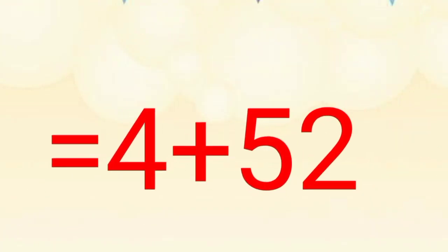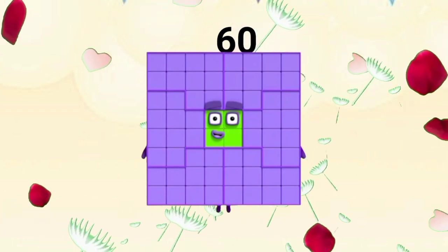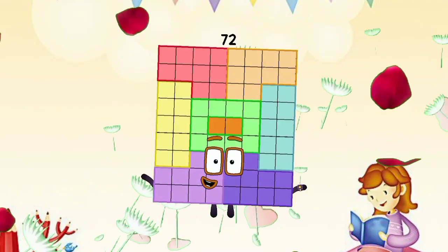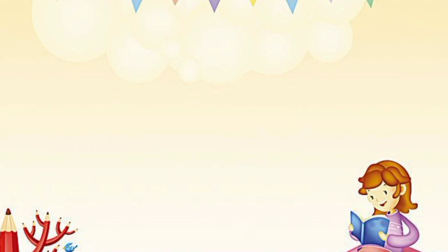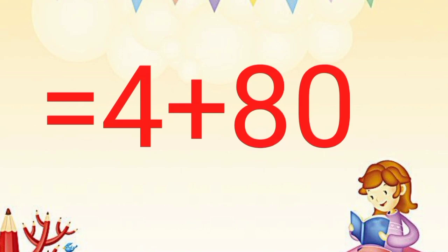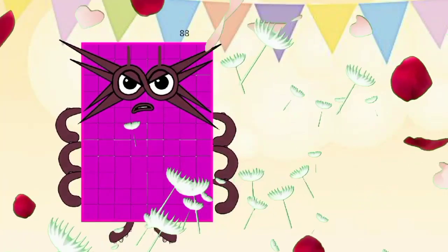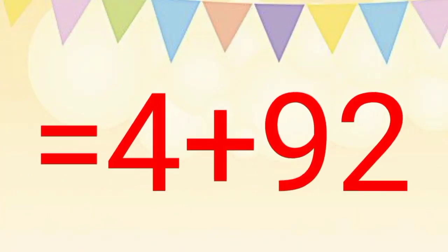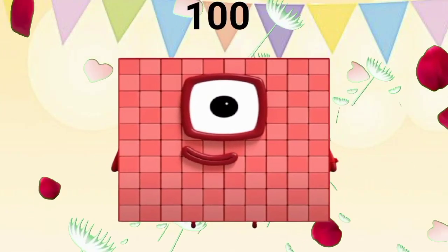Fifty-two plus four equal to fifty-six. Fifty-six plus four equal to sixty. Sixty plus four equal to sixty-four. Sixty-four plus four equal to sixty-eight. Sixty-eight plus four equal to seventy-two. Seventy-two plus four equal to seventy-six. Seventy-six plus four equal to eighty. Eighty plus four equal to eighty-four. Eighty-four plus four equal to eighty-eight. Eighty-eight plus four equal to ninety-two. Ninety-two plus four equal to ninety-six. Ninety-six plus four equal to one hundred.